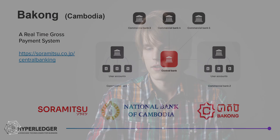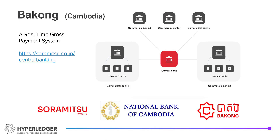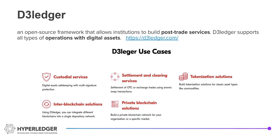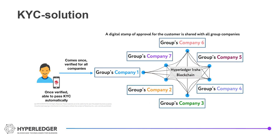Let's look at the projects that are using Hyperledger Iroha. One of the most exciting is named Bakong — a project involving the bank system of Cambodia that provides real-time gross payment settlement. There are thousands of users issuing transactions right now. Another project is called D3 Ledger and it provides post-trade services. There is also a know-your-customer solution in several companies in Indonesia.